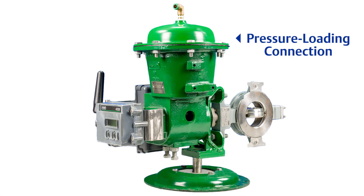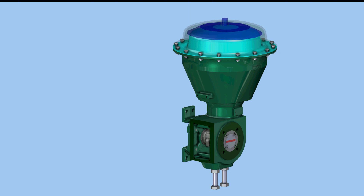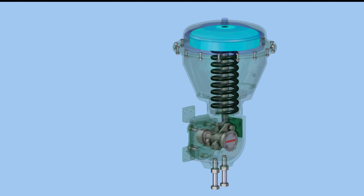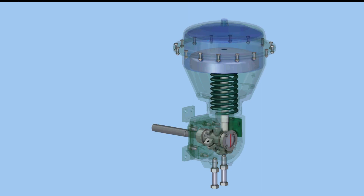The pressure loading connection is always located on the upper diaphragm casing. As pneumatic pressure is increased, it's applied to a diaphragm which transfers the force to a diaphragm plate. The diaphragm plate is connected to the actuator stem, which connects to a lever that turns the valve drive shaft.